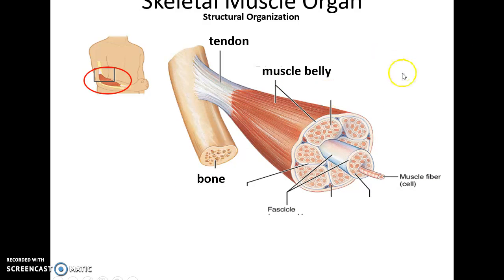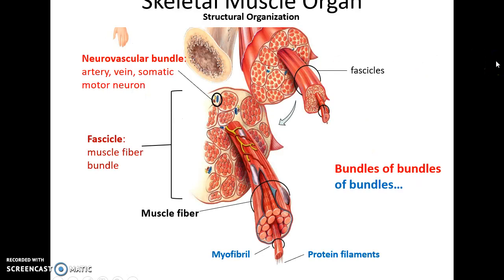A muscle organ has a belly — the main portion where the cells are — with a tendon that attaches the skeletal muscle to a bone or to skin. If you look at a muscle organ, you will see that it is made up of bundles of cells called fascicles.